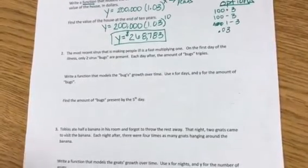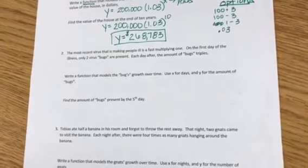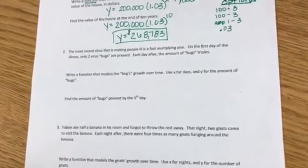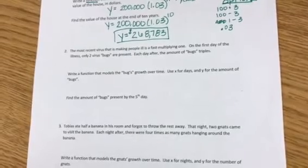Okay, number two. The most recent virus that is making people ill is a fast multiplying one. On the first day of the illness, only two virus bugs are present. Each day after, the amount of bugs triples.